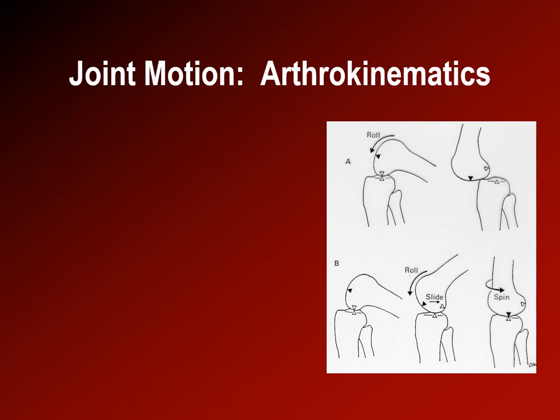In addition to rolling, the femur also spins — specifically, external rotation of the tibia, which is the same as internal rotation of the femur. This is called the screw-home mechanism. It maximizes contact between the tibia and the femur and tightens the collateral ligaments, making the knee a very stable joint when fully extended.